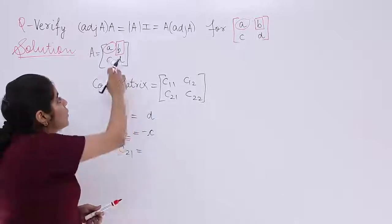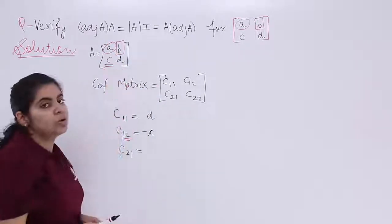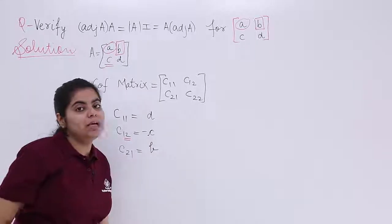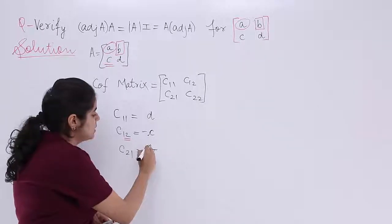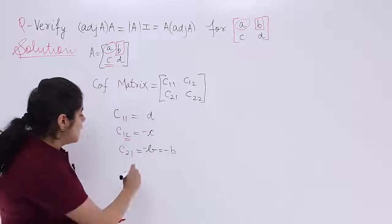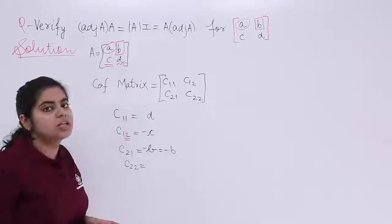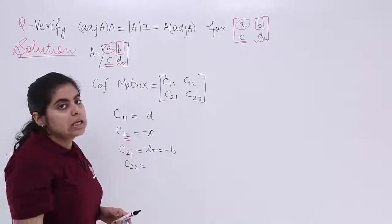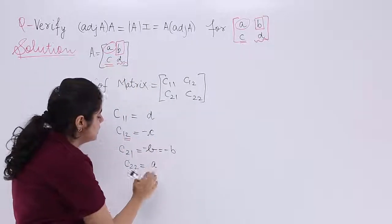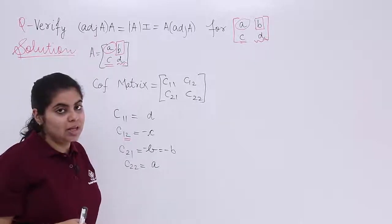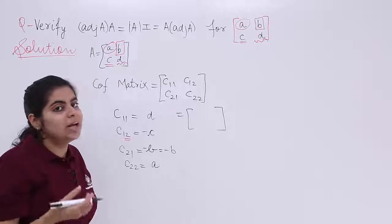C21 means second row, first column — element c. Ignoring the first column and second row leaves b. Since 2+1=3 is odd, C21 = −b. C22 means second row, second column — element d. Removing that row and column leaves a, so C22 = +a. Now with all cofactors, we can write the cofactor matrix and its transpose gives adjoint(A).